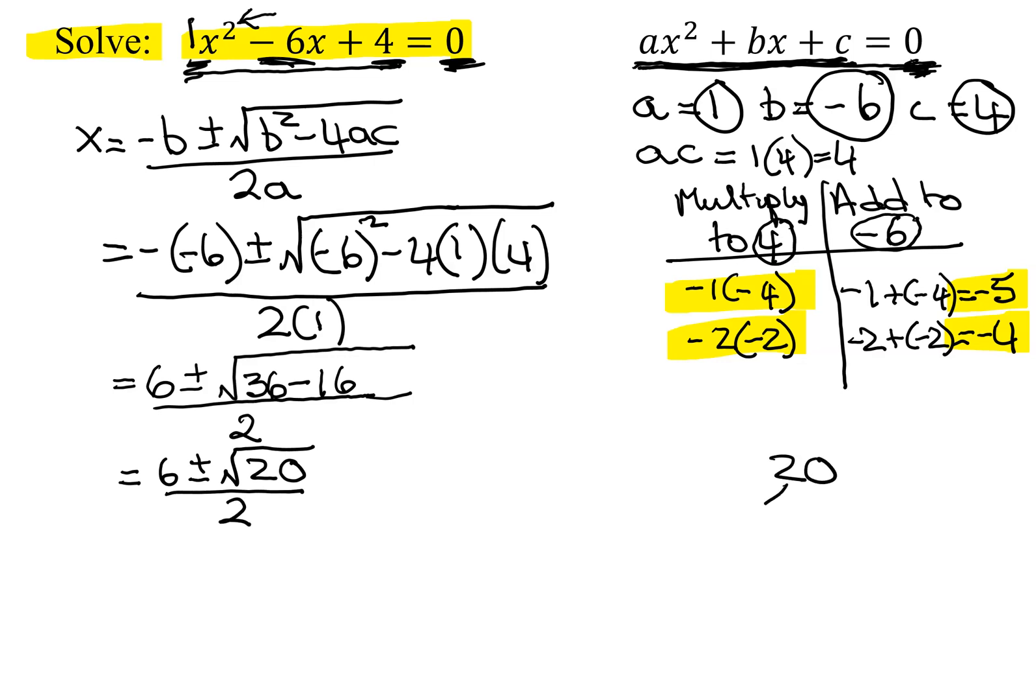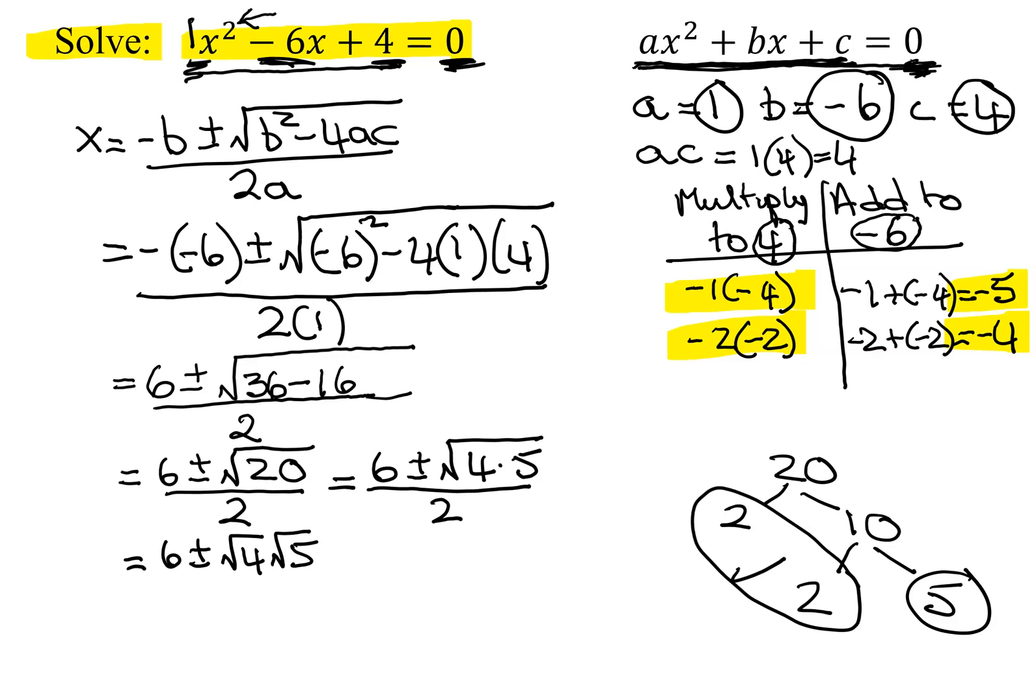Let's factor 20, 2 times 10, and 10 is 2 times 5. So I have a pair here, and then I have a 5 left over. So this is 6 plus or minus the square root of 4 times 5, remember that pair of 2 times 2 here becomes the 4, all divided by 2. So I get 6 plus or minus the square root of 4, all divided by 2, which is 6 plus or minus the square root of 4 is 2, the square root of 5, all divided by 2.